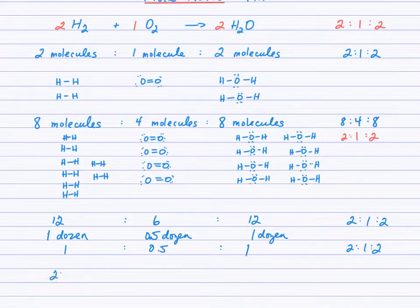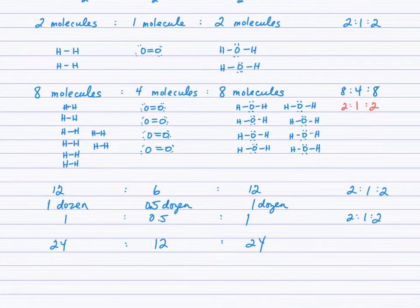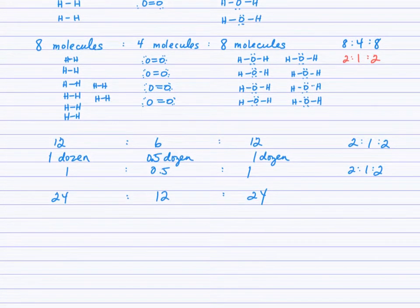What if we had 24? That's 24:12:24. So we have two dozen H₂, one dozen O₂, and two dozen water molecules.